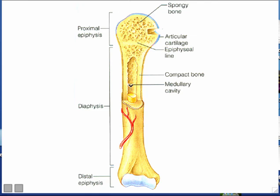There are actually two types of marrow. One is called yellow marrow, which is adipose tissue — so inside some of your bones you find fat tissue. The other type is called red marrow, which is red colored. The red marrow is actually the manufacturing center for your blood cells — all of your blood cells are created inside the red marrow of your bones.